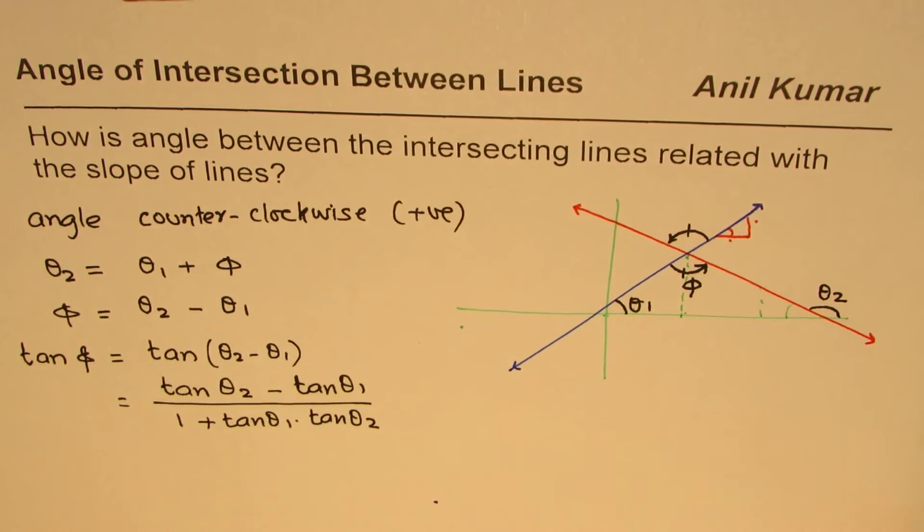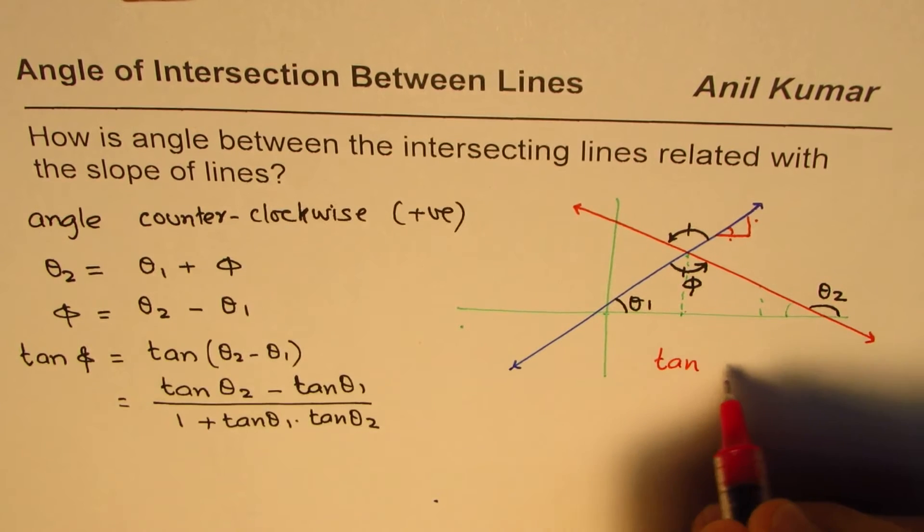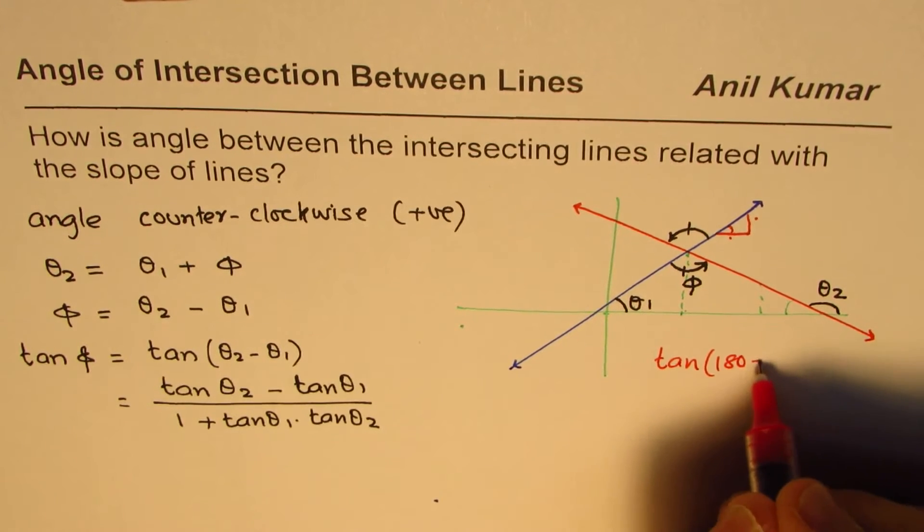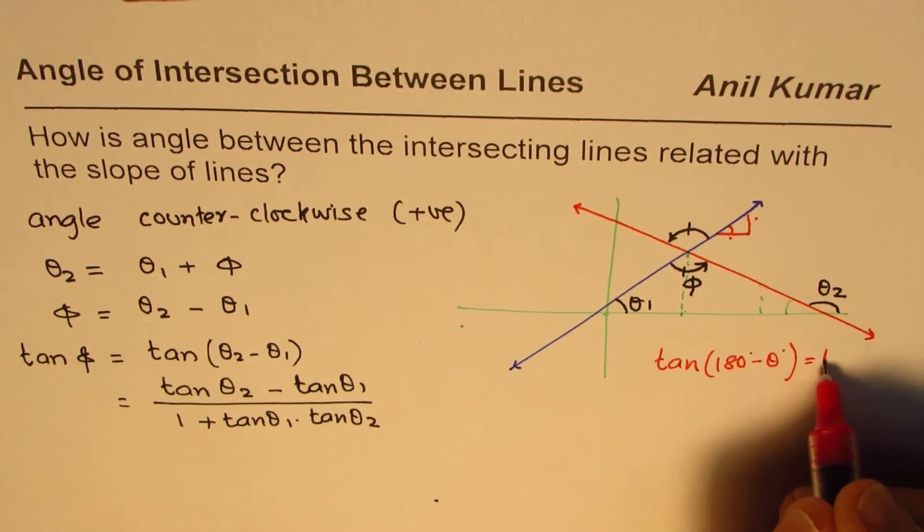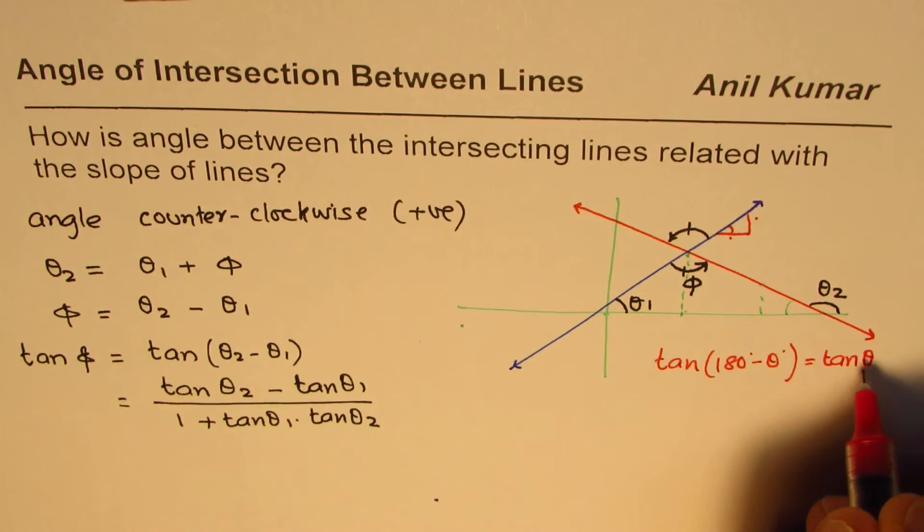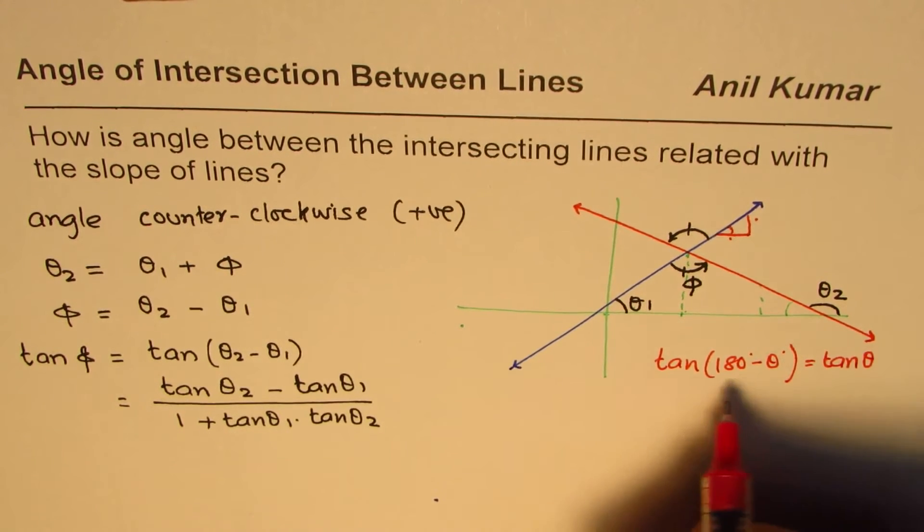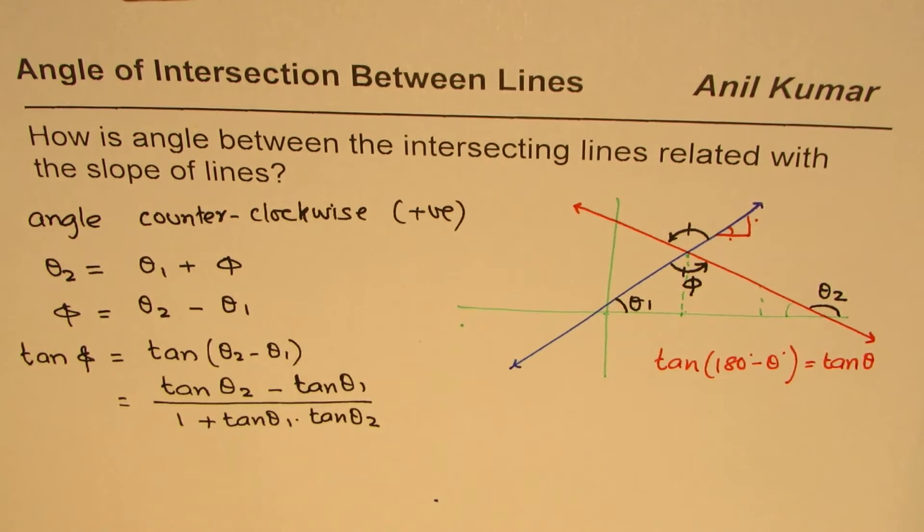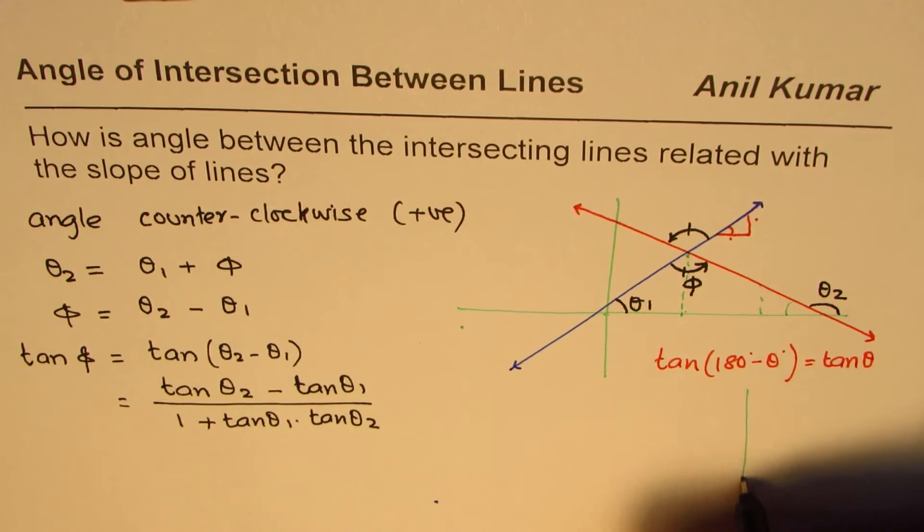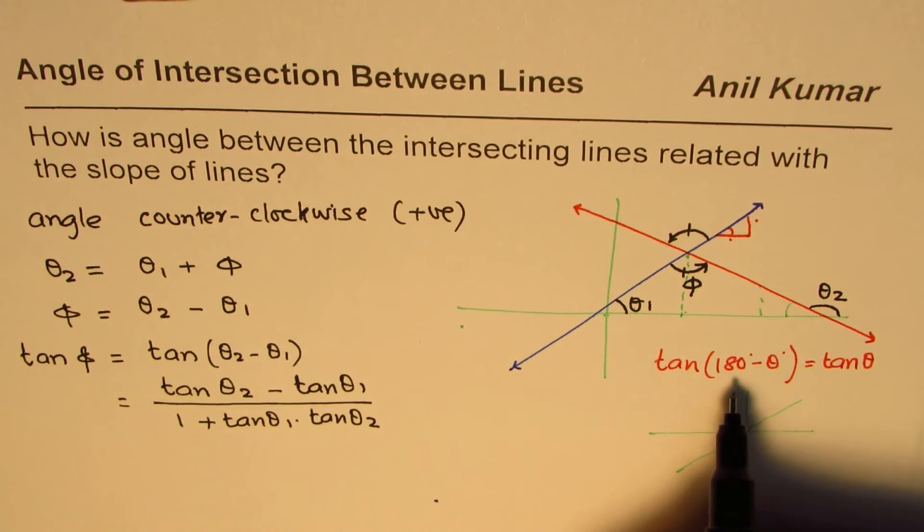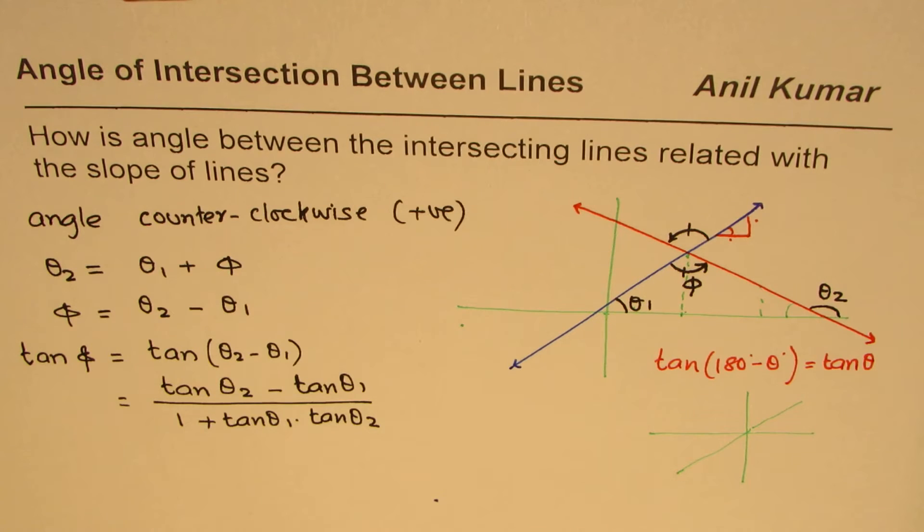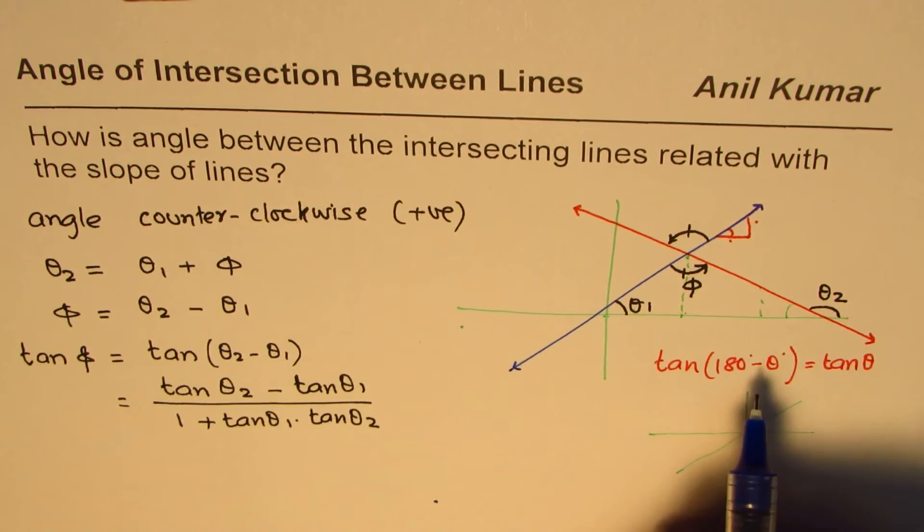Now in tan what you will also realize is, let me write down here, you should understand the tan of 180 degrees minus theta degrees equals tan of theta. Since tan is positive in first and third quadrant, that is an identity, tan repeats after every 180 degrees, its time period is 180 degrees.